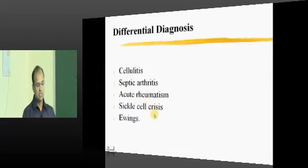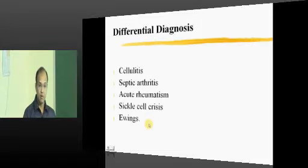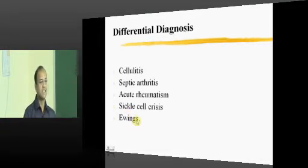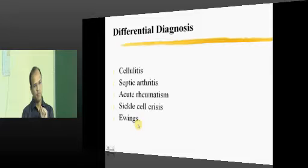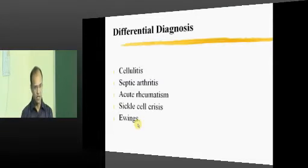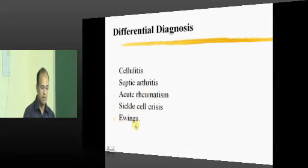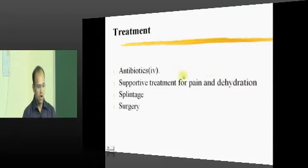Next differentials include sickle cell crisis and Ewing's tumors. Ewing's tumors present just like acute hematogenous osteomyelitis and are an even more dangerous condition. That is why whenever you take a biopsy sample, you send it for two things: any biopsy has to be cultured, and any cultured sample has to be biopsied. Because sometimes Ewing's tumors present just like acute hematogenous osteomyelitis.